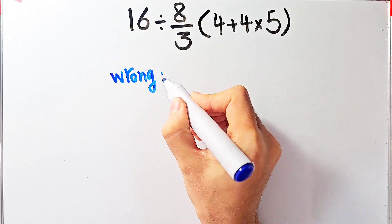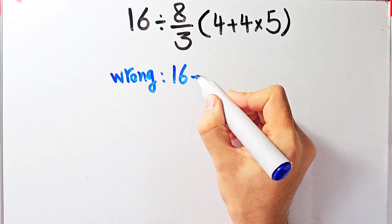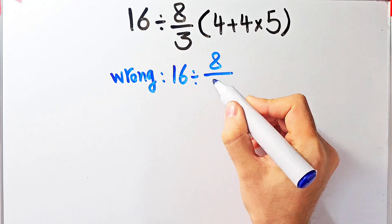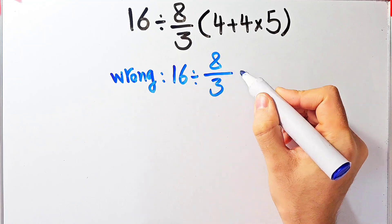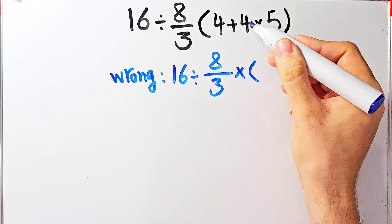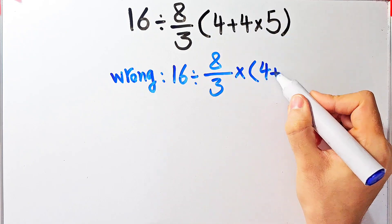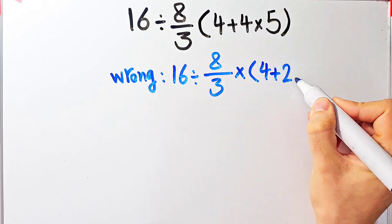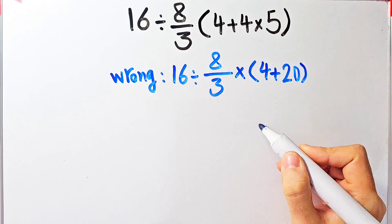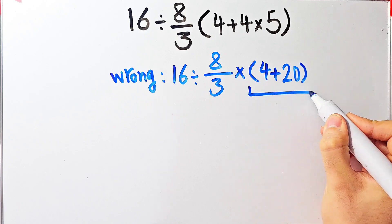Some people solve this question like this: 16 divided by 8 over 3, and in the parentheses 4 plus 4 times 5, which equals 20. After that they simplify the parentheses: 4 plus 20 equals 24.